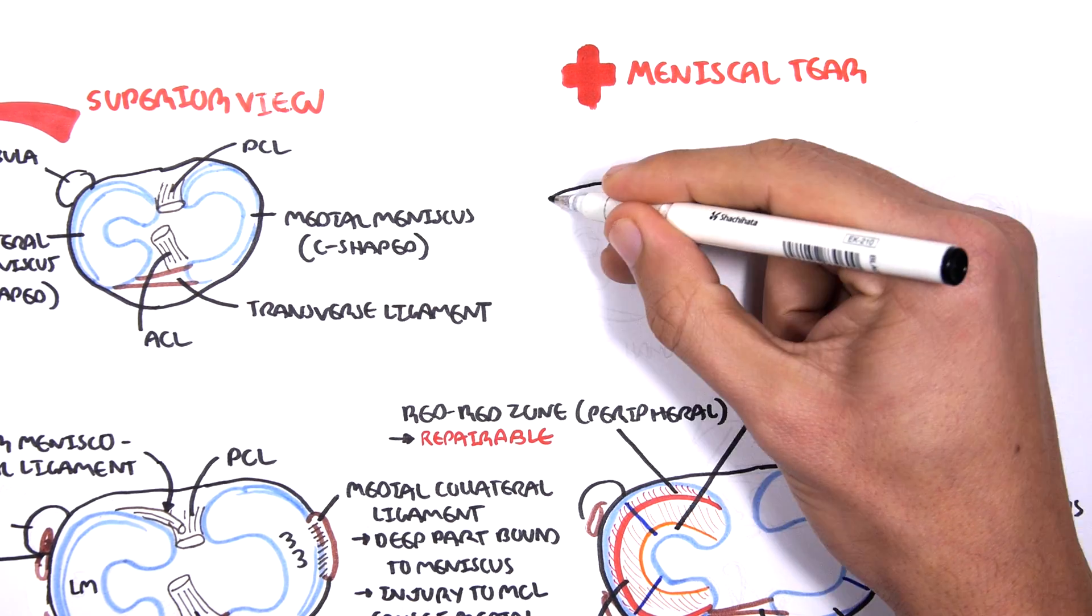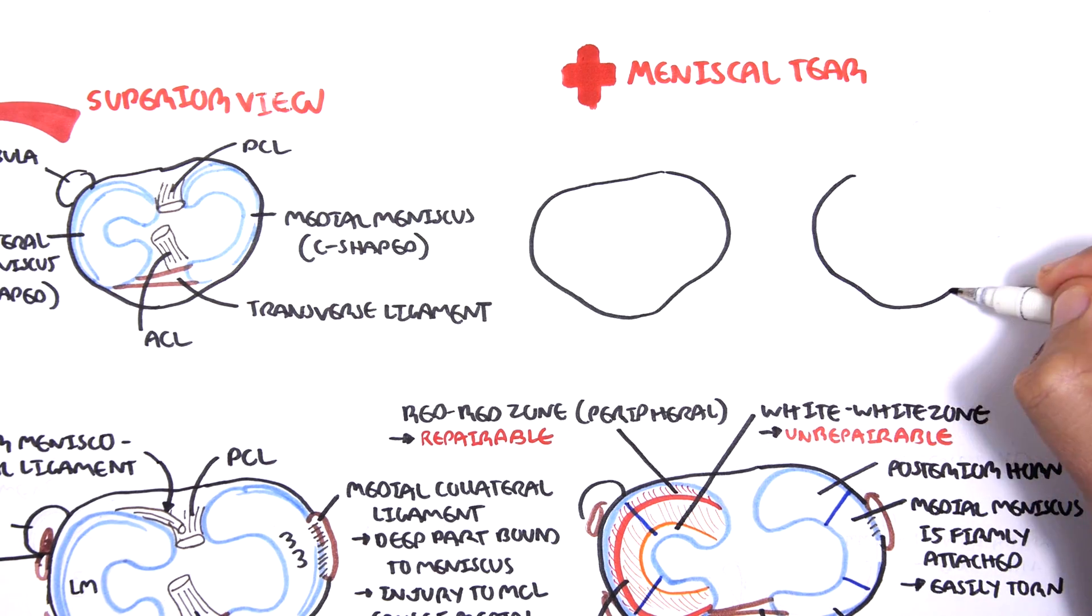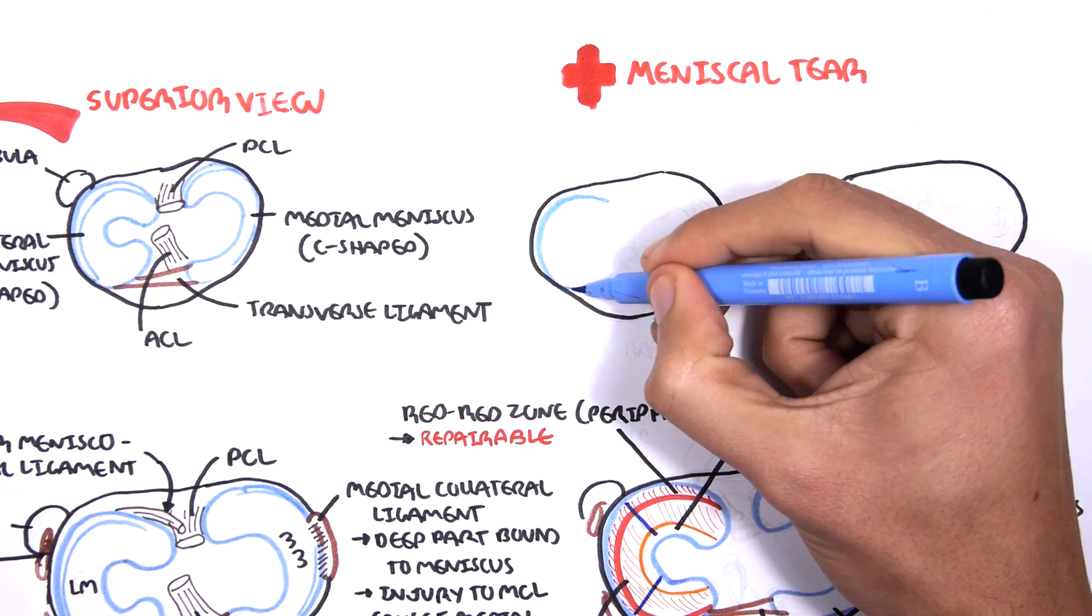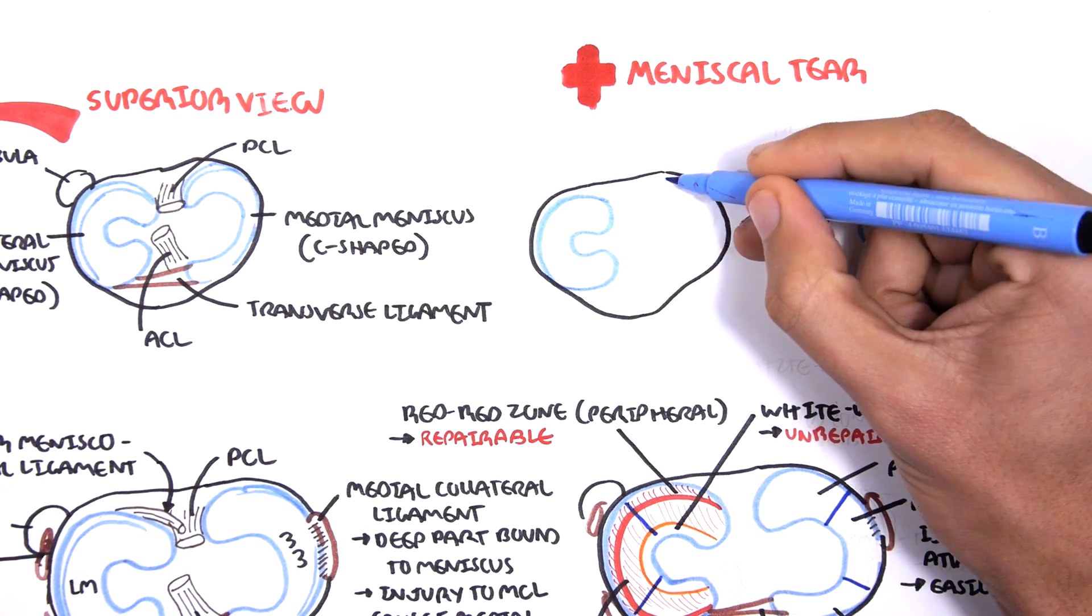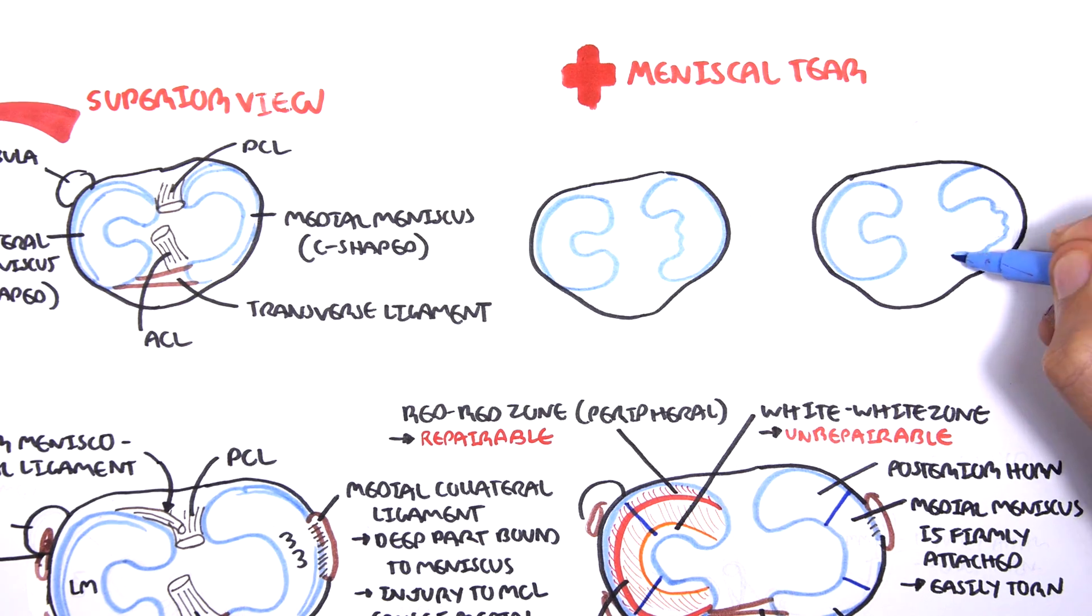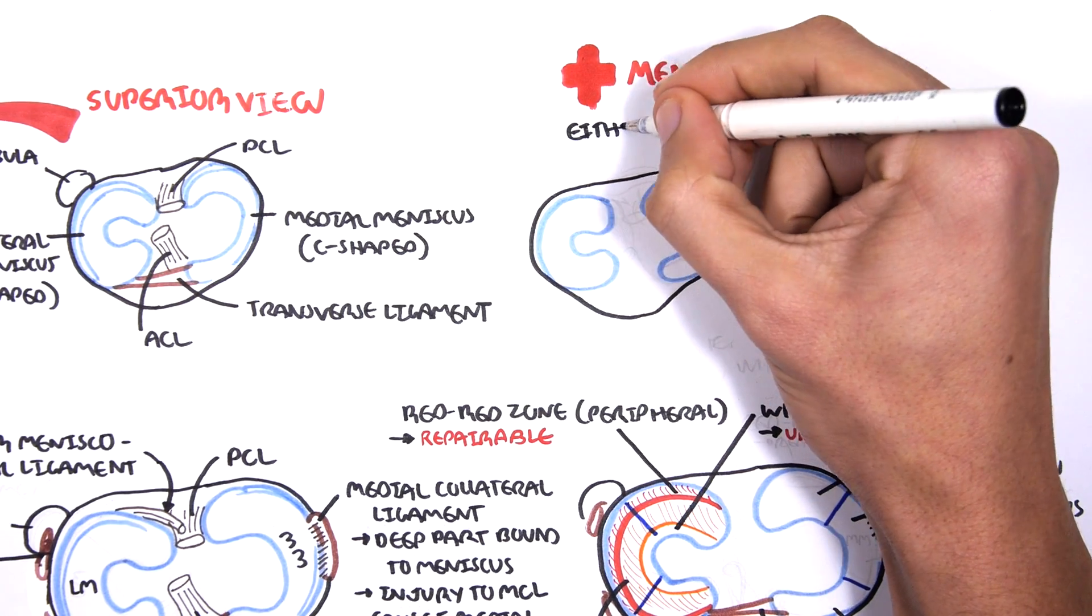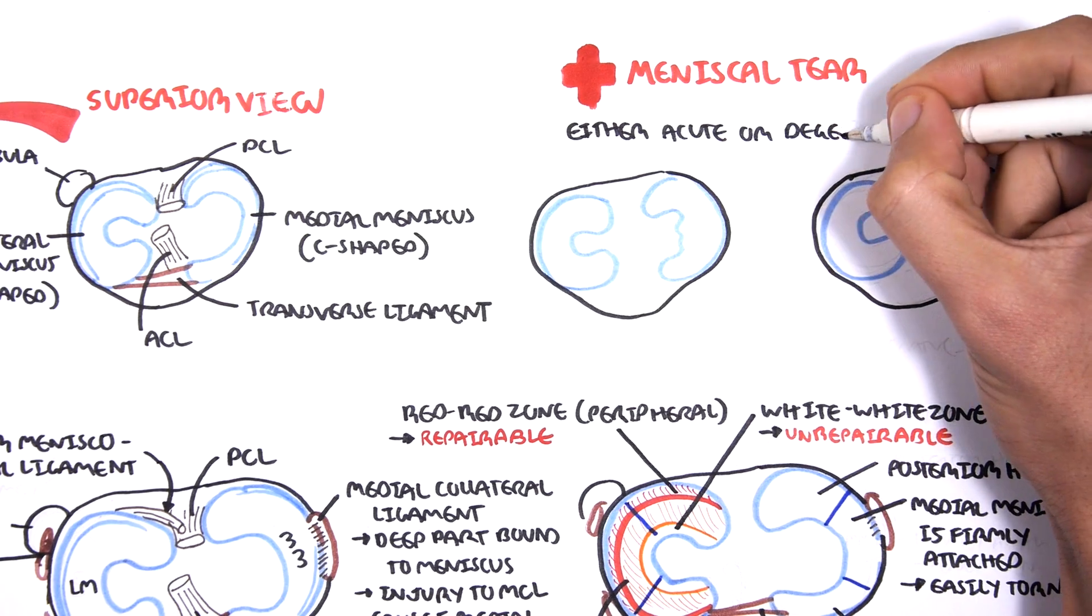So, clinical relevance of the meniscus. Well, meniscal tears are very common. It can occur in healthy, young, active adolescents or in adults and the elderly. So we can say meniscal tears can either be acute or degenerative.